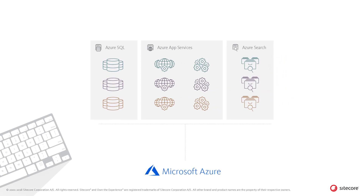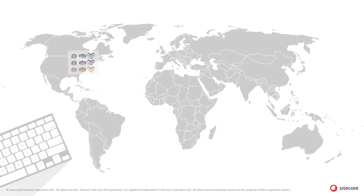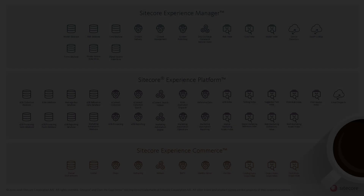Flexibility in the Sitecore architecture can also be achieved by moving to the Sitecore Azure platform as a service, which means that scalability and reliability is handled by the Microsoft Cloud capabilities. This makes it much easier to support highly scaled geographical setups where specific roles are hosted across multiple locations.